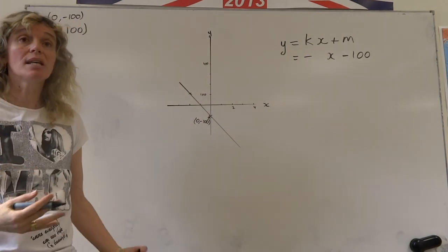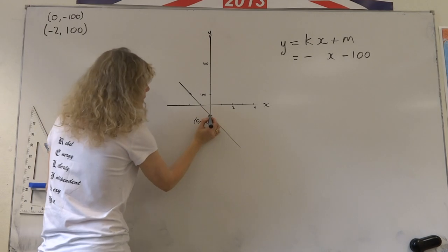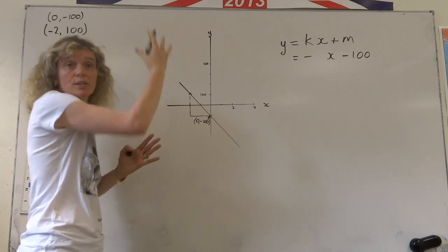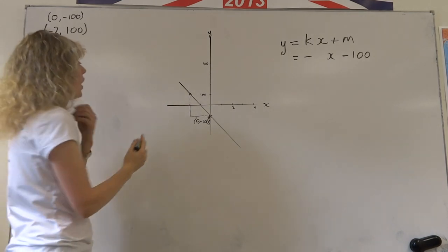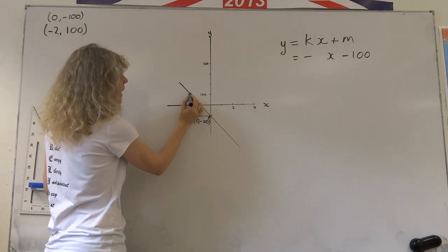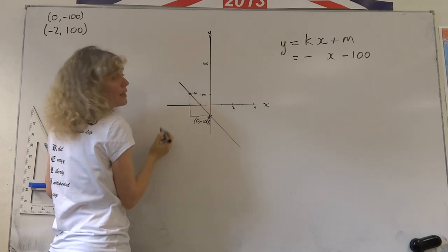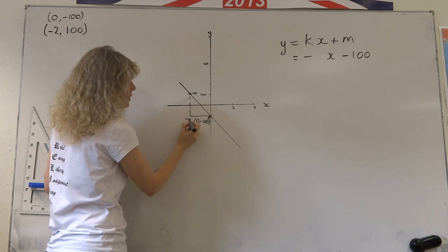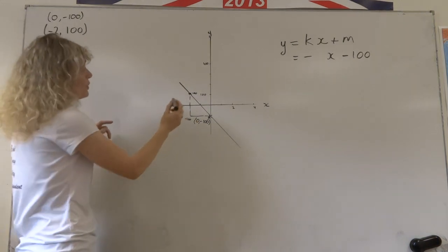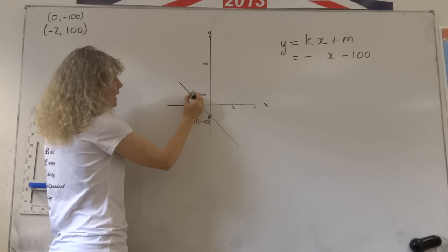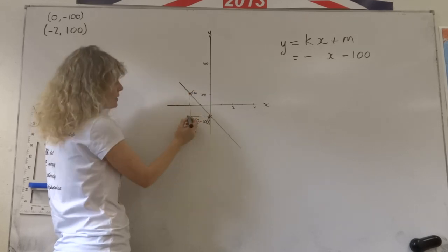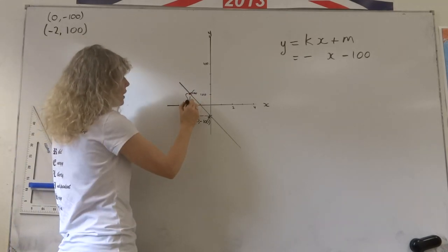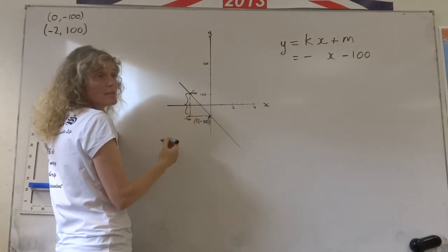Now we just have to decide how steep it is. How long does it go along the x-axis compared with how high it goes in the y-axis? Up here we have the point 100 in the y-axis, and down here we have the point minus 100 in the y-axis. So if we were just looking at the y coordinate, the y coordinate here is 100 and the y coordinate here is minus 100.